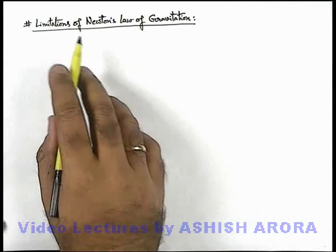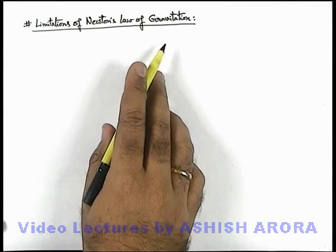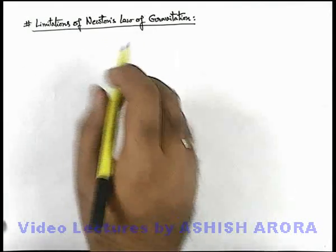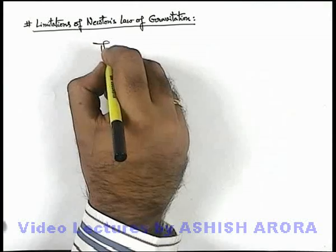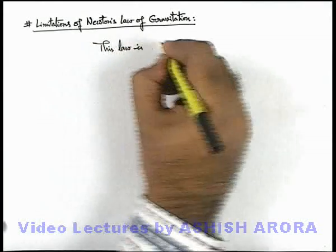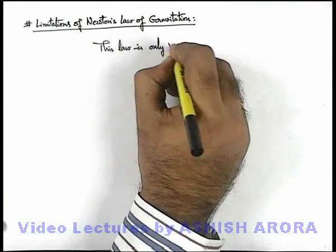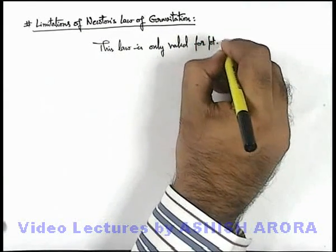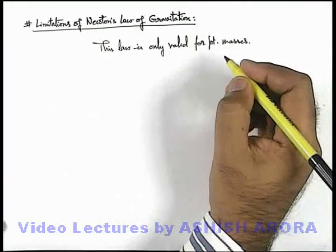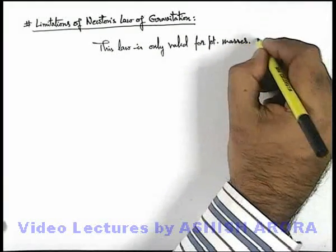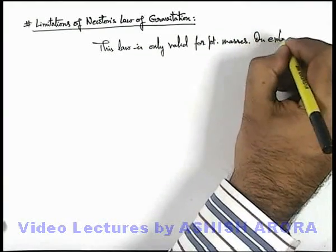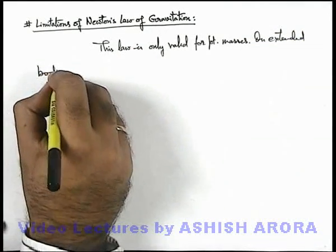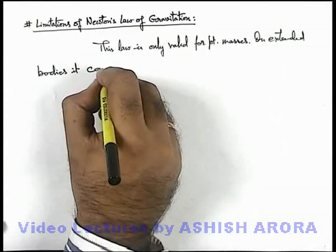Let's discuss the limitations of Newton's law of gravitation. About Newton's law, we can write that this law is only valid for point masses. If masses are extended — when we talk about extended bodies — it cannot be directly applied on extended bodies.